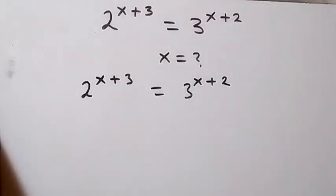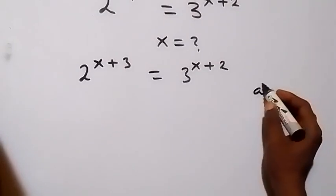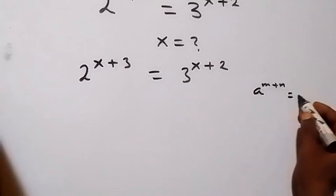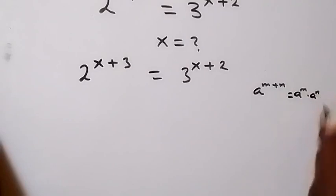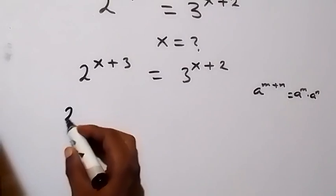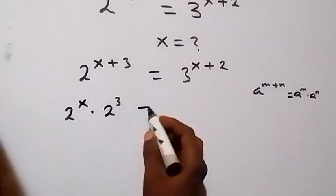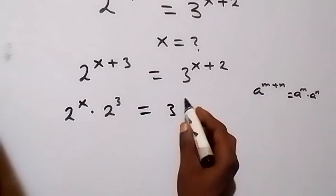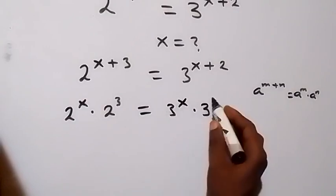Now from here, when we follow the law of indices, we have a raised to power m plus n. This is the same thing as a raised to power m times a raised to power n. So when we use this here, this will give us 2 raised to power x times 2 raised to power 3, then equals to similarly here we have 3 raised to power x times 3 raised to power 2.